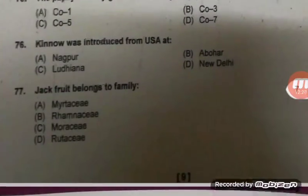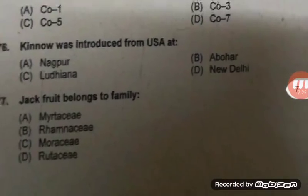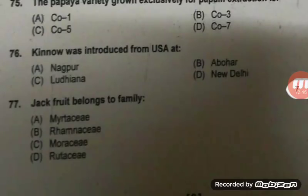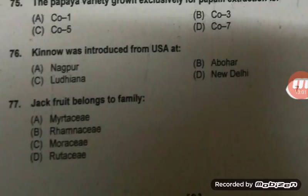Kinnow was introduced from USA at Abohar, Punjab. Research work started during 1915 at USA, it was developed during 1935, and introduced in India at Abohar, Punjab during 1959. It is a cross between King and Willow Leaf mandarin — Citrus nobilis and Citrus deliciosa — developed by Dr. H.B. Frost. Jackfruit belongs to the family Moraceae — right answer C, also a repeat question.